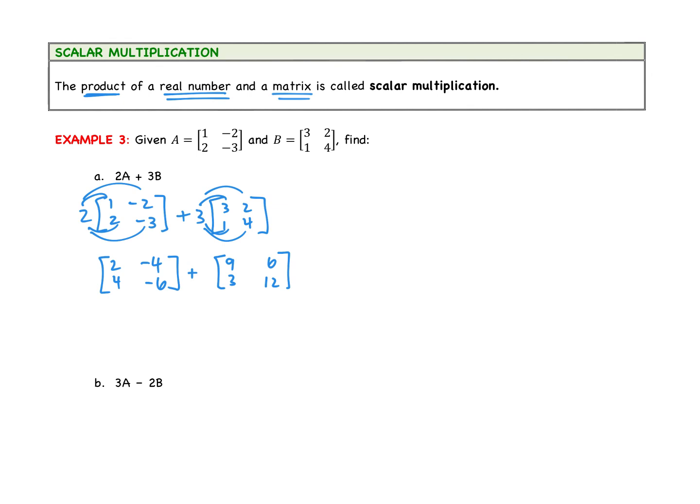And now I'm adding the two matrices. Now remember, the only reason I can add them is that the dimensions are the same. So this one is 2 by 2, this one is 2 by 2, same dimensions, so I can add them. So we are going to add the corresponding elements. 2 add 9 would give us 11. Negative 4 add 6 gives us 2. 4 add 3 gives us 7. And negative 6 add 12 gives us 6.